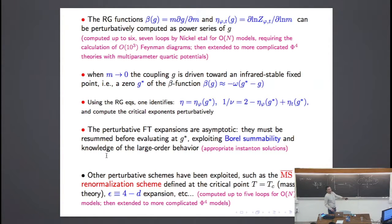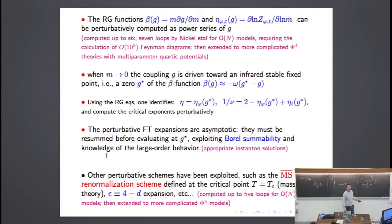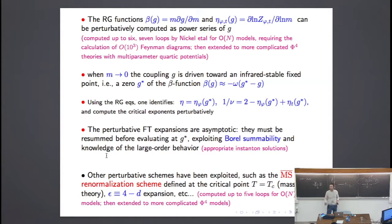This is not the only scheme. We can also introduce other schemes, for example the so-called MS-bar renormalization scheme, which is also the same scheme used in high energy physics. This scheme leads to the epsilon expansion or other three-dimensional systems. One can get similar renormalization group equations and compute the beta functions perturbatively. The main difference is that this scheme is defined for the massive theory, for the high-temperature phase, while the other scheme can also be defined at the critical point.